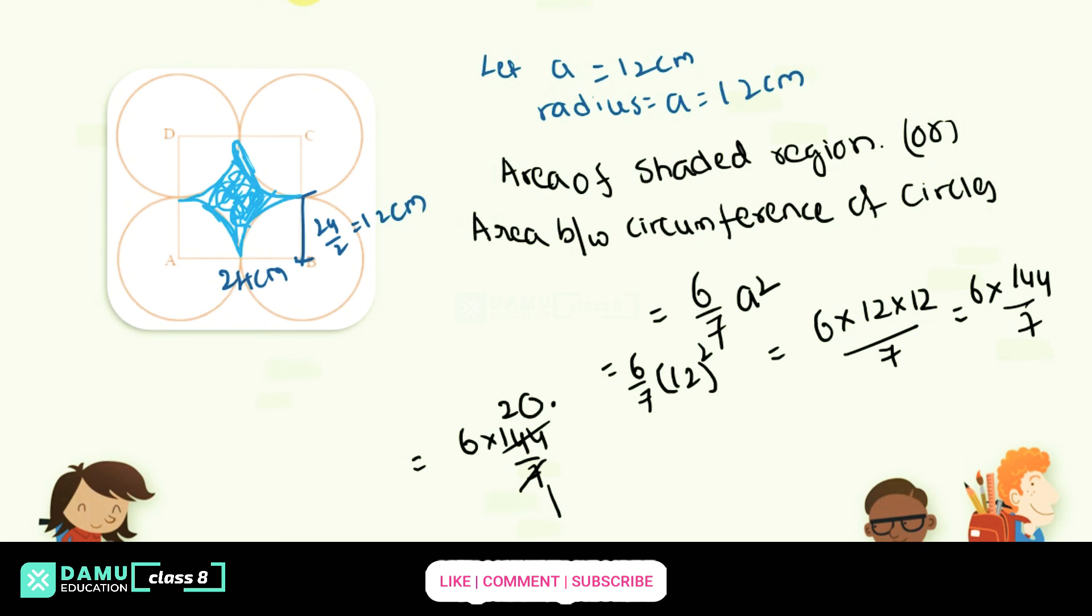7 into 1 is 7, 2 is 14, then 4. Then added 1 more 0, that will be 20 point. Then again it will be 47, 7 into 5 is 35. Then it will be like 6 into 20 point 5 7 we will get. Then it will be 6 into 20.57, then what you will get here, 123.4 centimeter square. Thanks for watching, please subscribe.